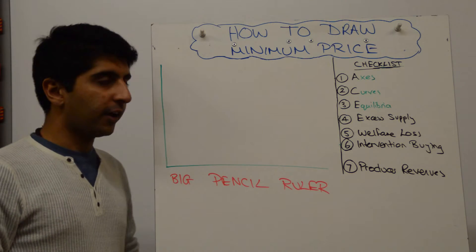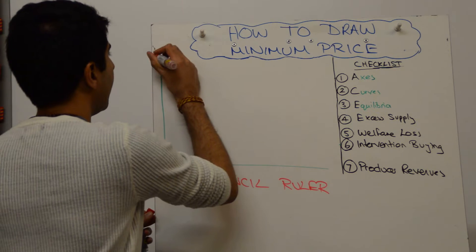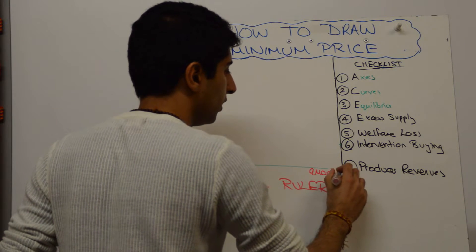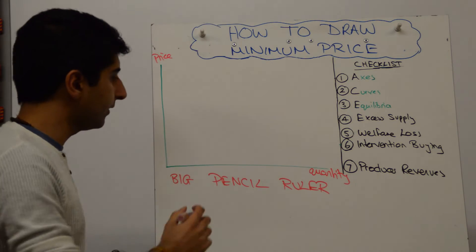How do you draw this diagram? Well, start by labeling the axis, call that price, call that quantity. Again if you know the market, then apply on the axis.